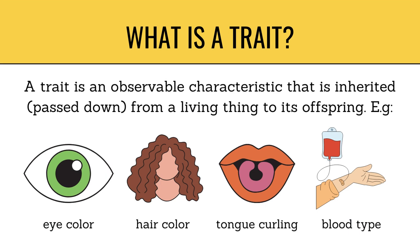If we talk about what traits are, a trait is an observable characteristic that is inherited from a living thing to its offspring. For example, eye color, hair color, tongue curling, and blood type.